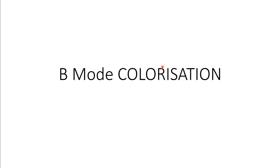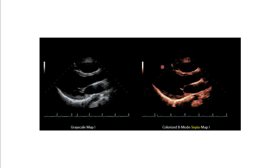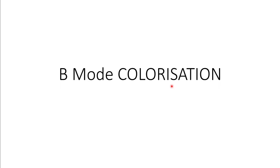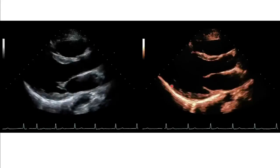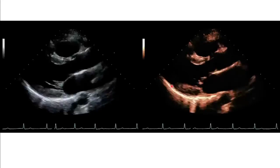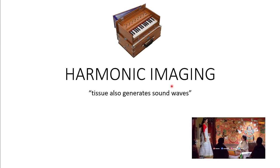Next is B-mode colorization — generally we see the echo image as a black-and-white or gray-shade image. If we apply a color such as sepia over that, certain structures can be seen more clearly. In certain scenarios we can apply B-mode colorization — a single uniform color over the image — and some structures become more visible. Various colors are available: sepia, green, etc. A cine image shows the difference between various colors applied with B-mode colorization.